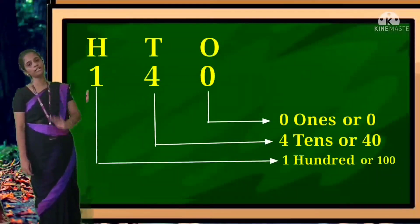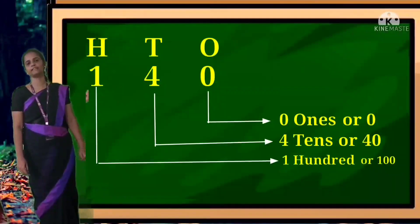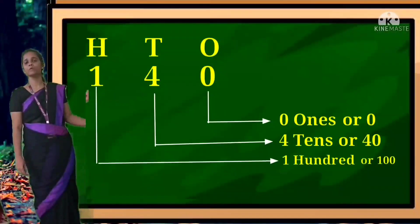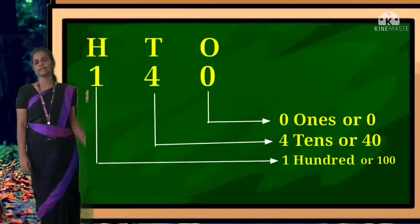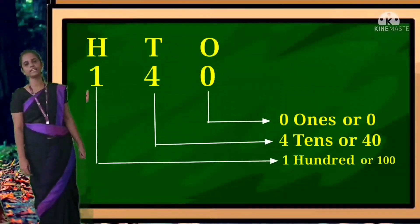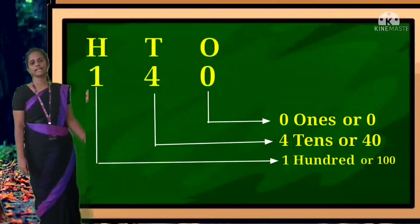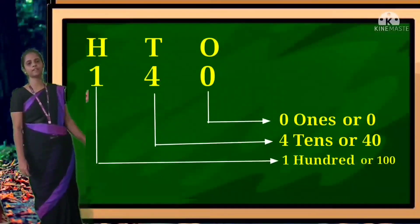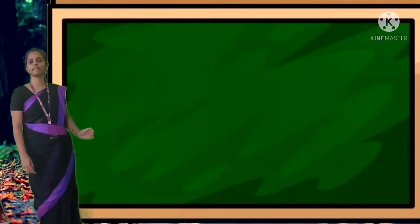Zero is in ones place, so only zero must be written. Four is in tens place — write 40. One is in hundreds place — write 100. Okay children, did you all understand the place value? Yes, so this is place value, and if you see place value you must draw the L-shaped line.